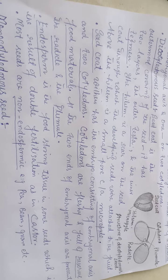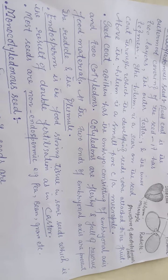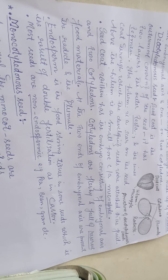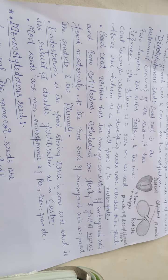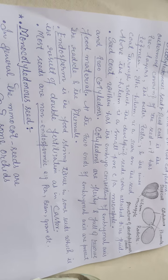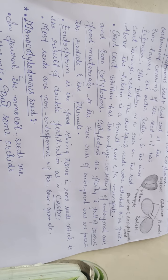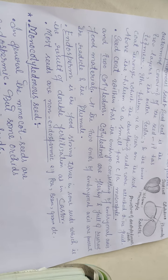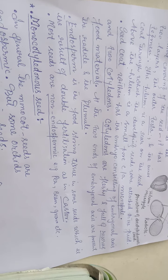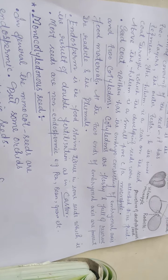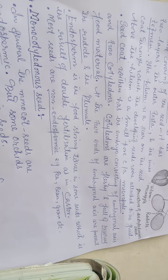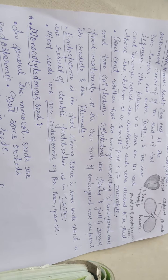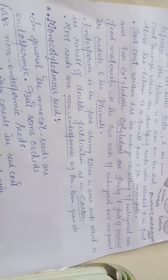At the two ends of the embryonal axis are present the radicle and the plumule. The radicle later develops into the root and the plumule develops into the shoot system of the plant. Endosperm is a food-storing tissue in some seeds, which is the result of double fertilization, as in the case of castor. Most seeds are non-endospermic — pea, bean, and gram are all non-endospermic seeds.